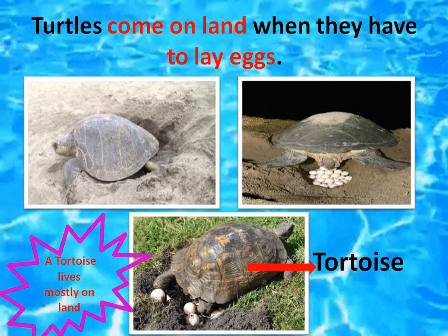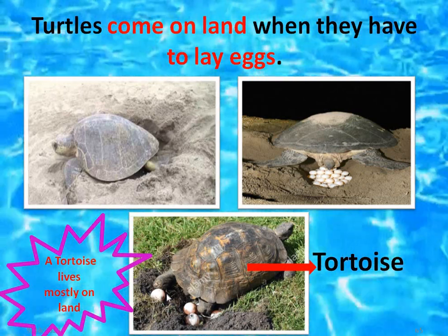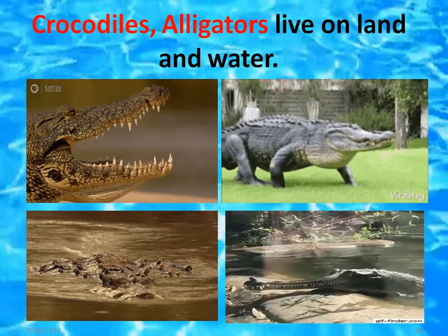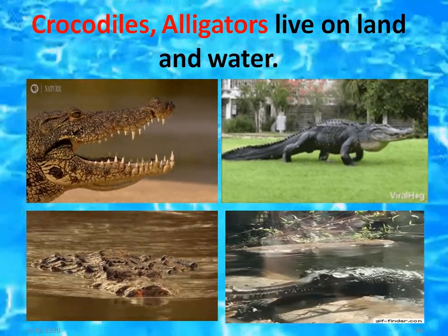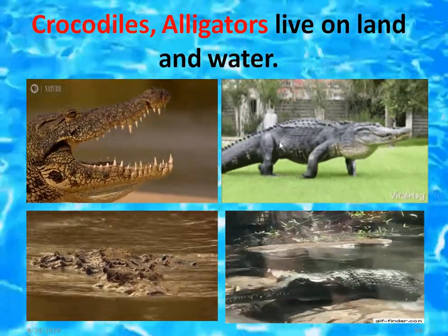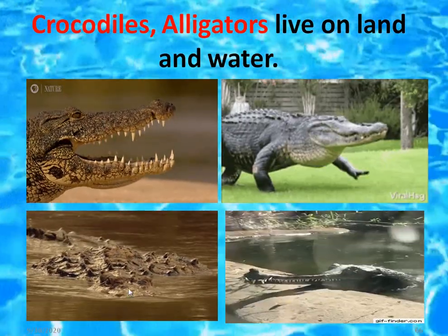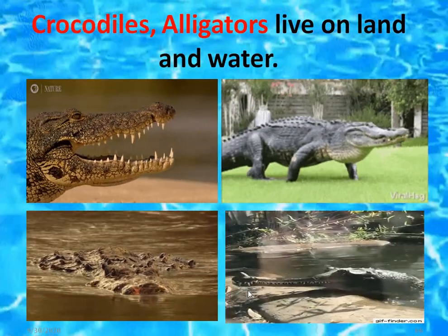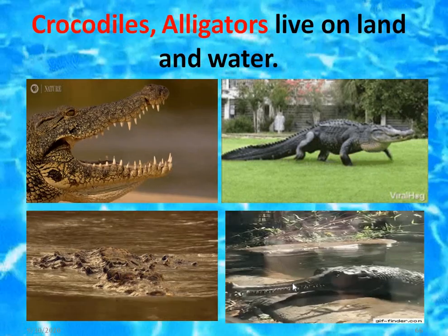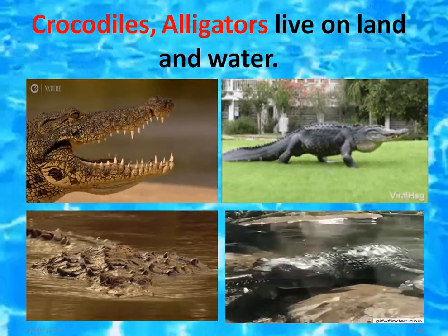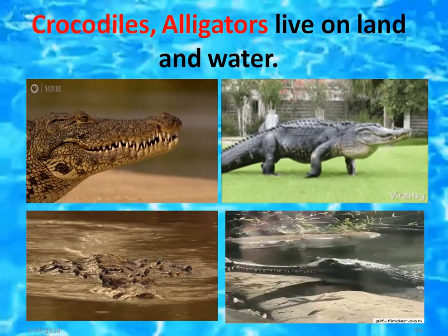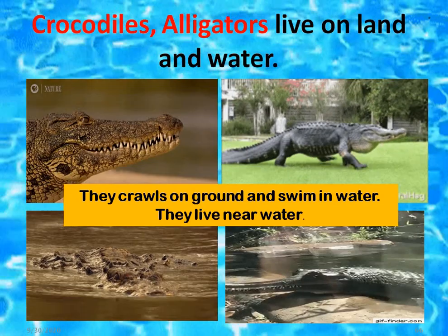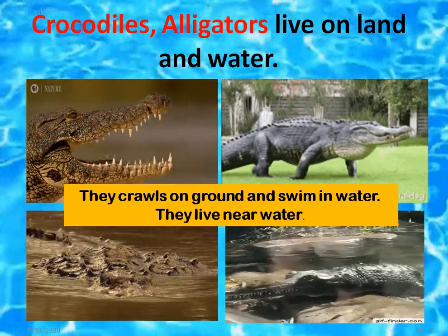Similarly, a tortoise also comes on land to lay its eggs. Now, crocodiles and alligators live on land and water. You can see here — these are crocodiles, and here is an alligator swimming. It also lives on land and water; sometimes it comes on land and sometimes it goes in water to cool down and hunt. So they crawl on the ground and swim in water — they live near water.